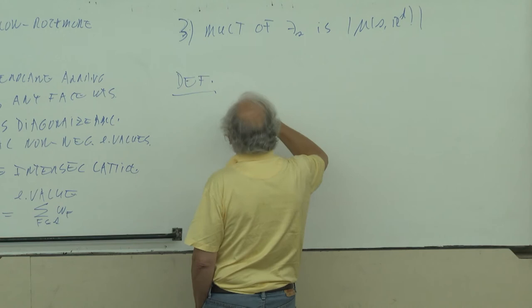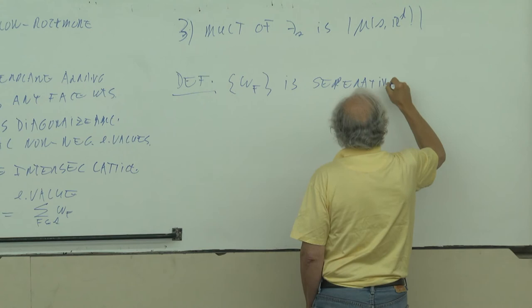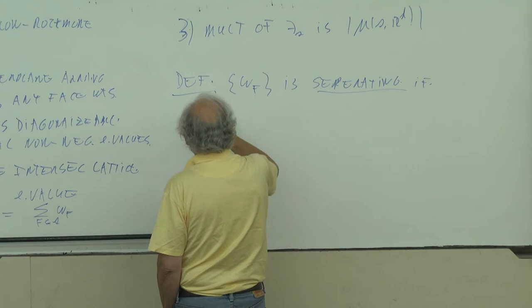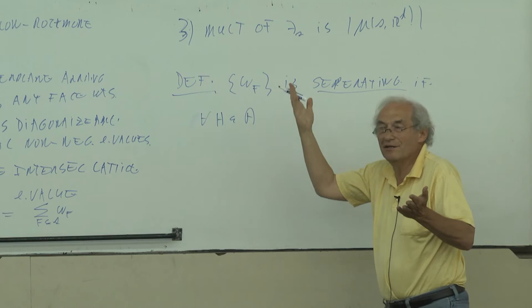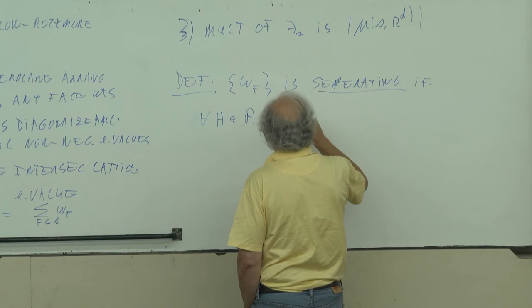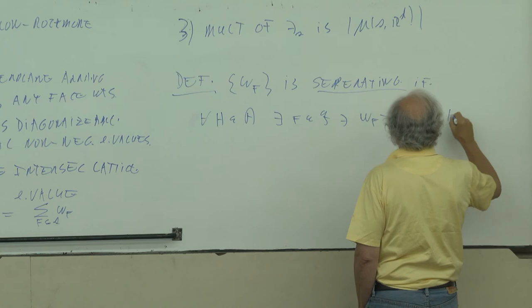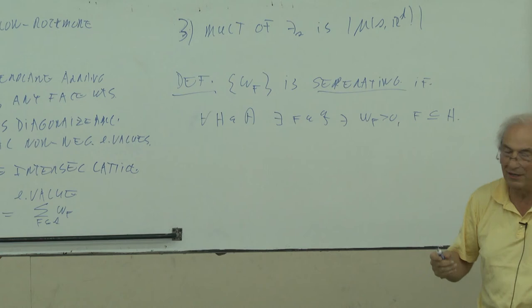In order to make progress, I need to make some hypotheses. Definition: the collection of face weights is separating if, for every hyperplane H in the arrangement, there exists a face F with w_F > 0 and F not contained in H. It just says not all of the face weight mass is contained in one hyperplane — otherwise you would restrict to that hyperplane and keep going.